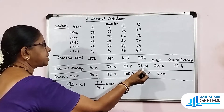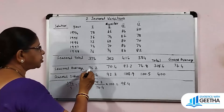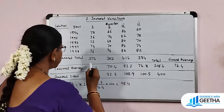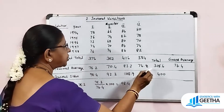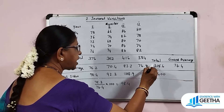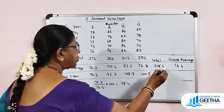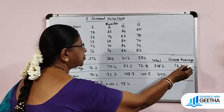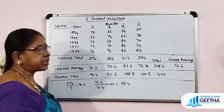Dividing by 5: 376 ÷ 5 = 75.2; 352 ÷ 5 = 70.4; 416 ÷ 5 = 83.2; 384 ÷ 5 = 76.8. The total of the seasonal averages is 305.6. Dividing 305.6 by 4 gives the Grand Average of 76.4.